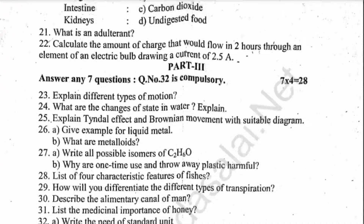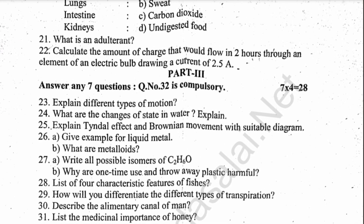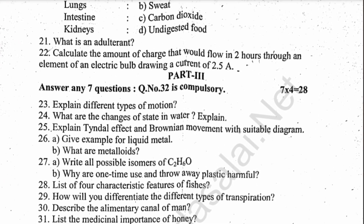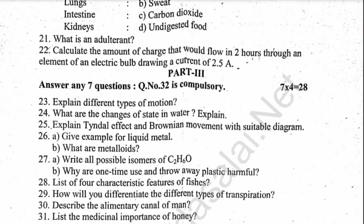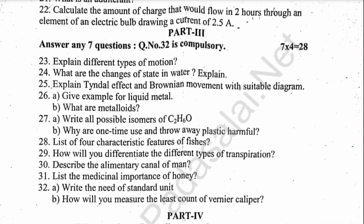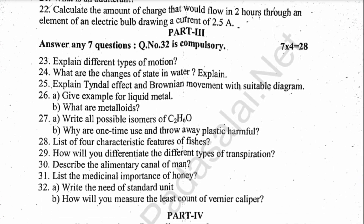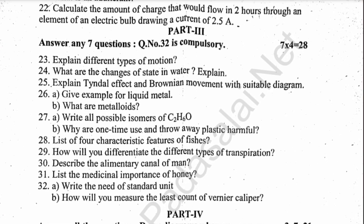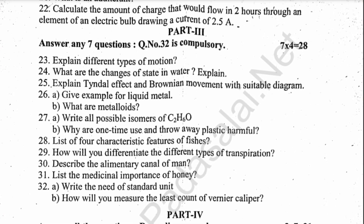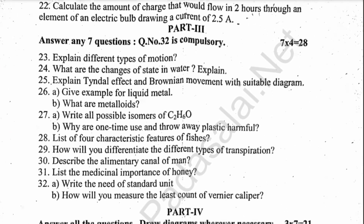Seven-mark questions: three questions worth 7 marks each, totaling 21 marks, covering physics and chemistry. Topics include how to measure using a hydrometer, and the construction and working of a hydrometer with a diagram. Also, the principle, construction, and working of a DC motor in physics.